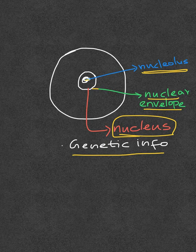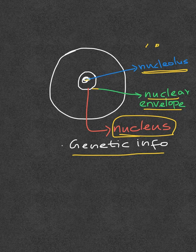Ribosomes are structures — they are not organelles. They are usually represented as dots within the cell. They contain RNA and they help in protein synthesis.